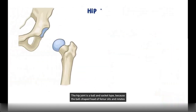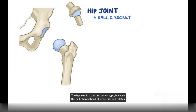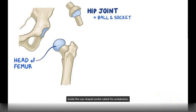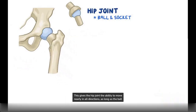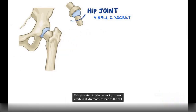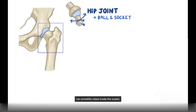The hip joint is a ball-and-socket type because the ball-shaped head of the femur sits and rotates inside the cup-shaped socket called the acetabulum. This gives the hip joint the ability to move nearly in all directions, as long as the ball can smoothly rotate inside the socket.